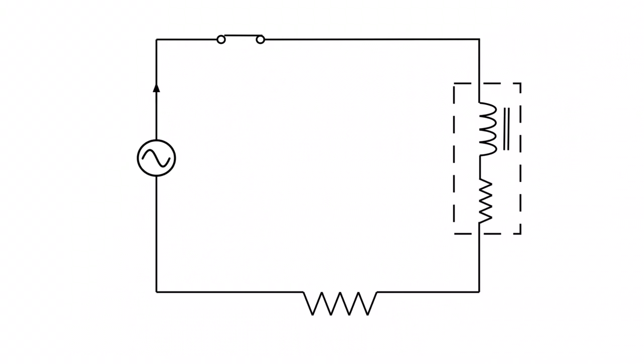This is going to be a walkthrough of a series RL circuit. The RL stands for resistance — we have a resistor here, and also this resistance here, so that's the R portion of the circuit. Then we have the L, which is the inductance. You might notice a dotted box around one component — that signifies this is a coil. The whole coil has both inductance and resistance in it.